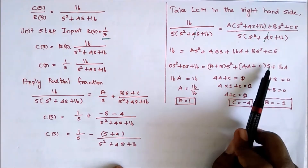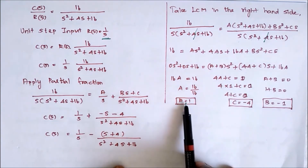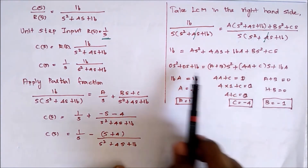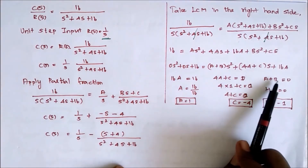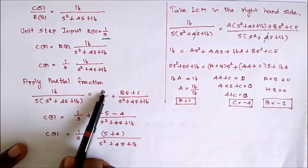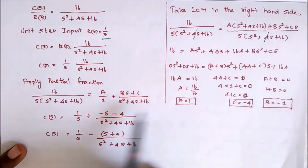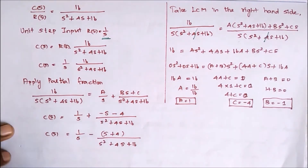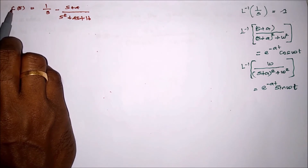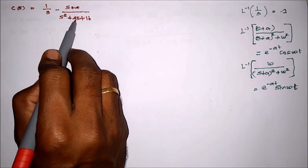Now we substitute A equals 1, B equals minus 1, C equals minus 4. Taking minus as common outside, C(S) equals 1/S minus (S plus 4) divided by S squared plus 4S plus 16. To get the response in terms of time, we apply the inverse Laplace transform. But the second term is not in standard form to apply the inverse Laplace transform directly, so we do a slight modification by completing the square.